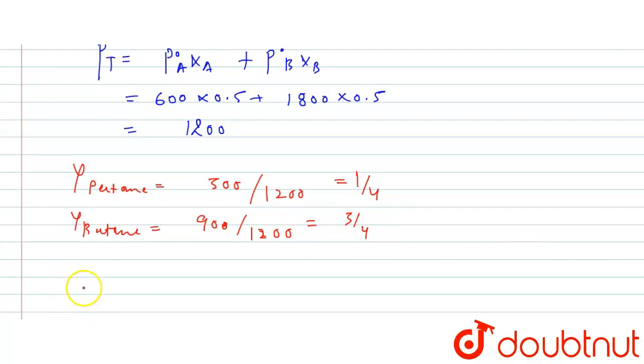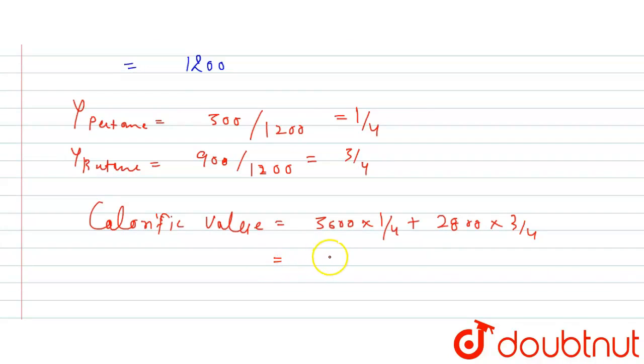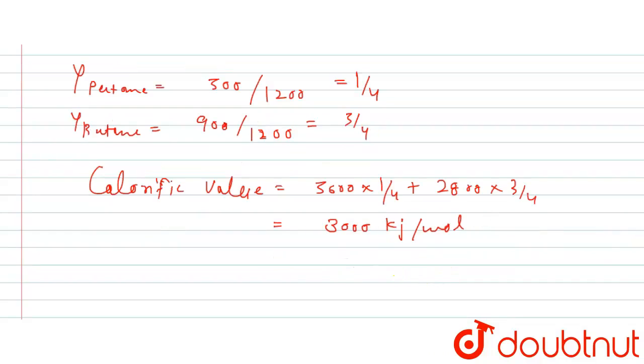So calorific value is equals to 3600 multiplied by 1 by 4 plus 2800 multiplied by 3 by 4, which equals 3000 kilojoule per mole. We have to give the answer divided by 100, so our answer is 30 kilojoule per mole.